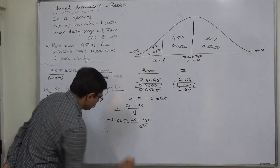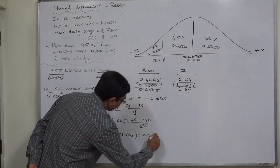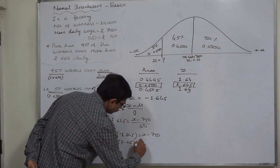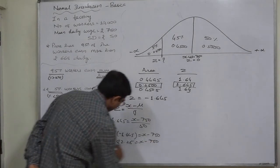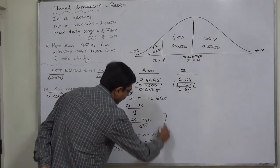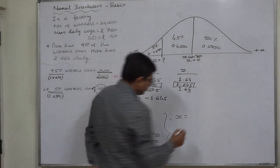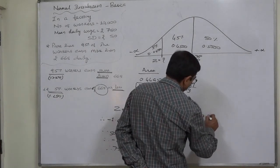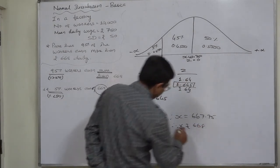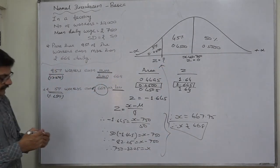Cross multiplication gives: 50 × (−1.645) = X − 750, so −82.25 = X − 750. Therefore 750 − 82.25 = X. Therefore X comes to 667.75, which is approximately 668.